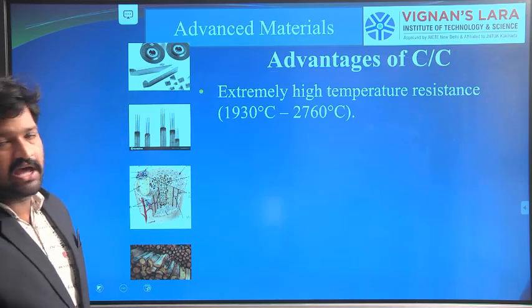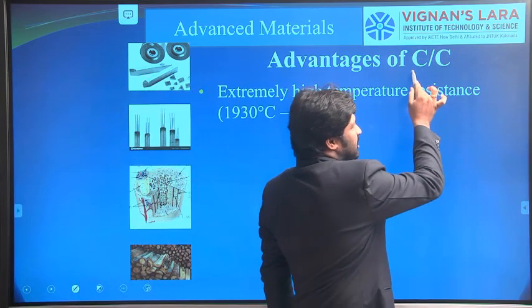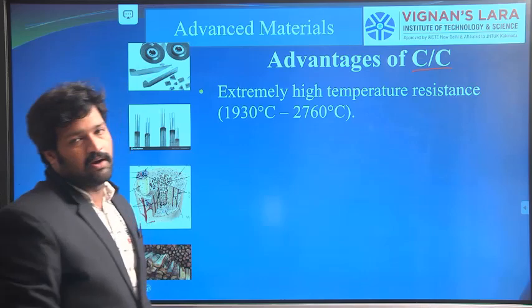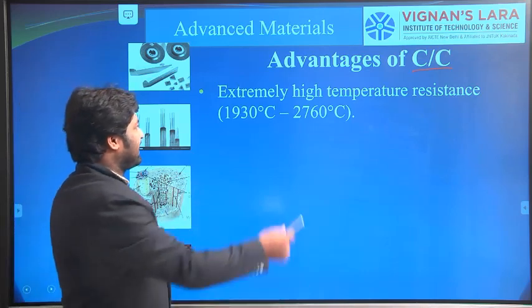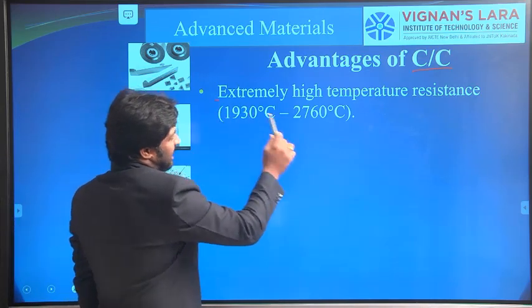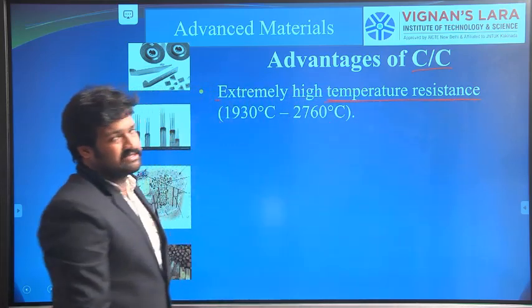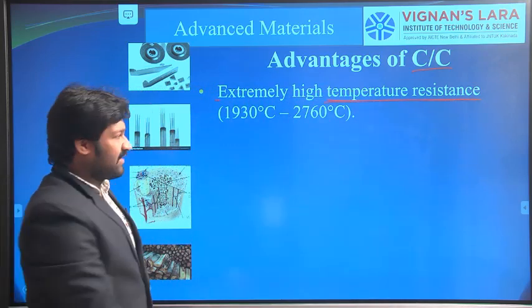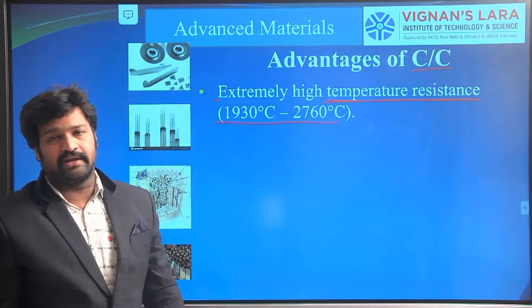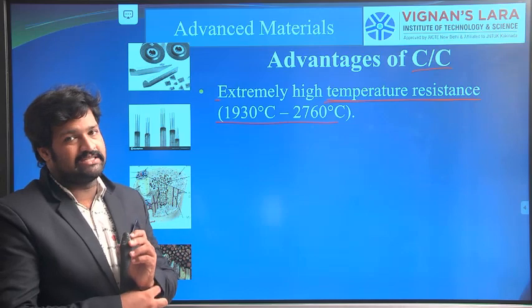The advantages of Carbon-Carbon Composites — also called CC composites — include extremely high temperature resistance. These materials can withstand temperatures of around 1900 to 2700 degrees centigrade.